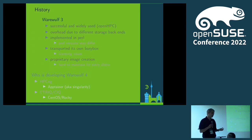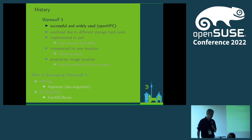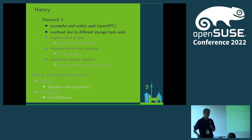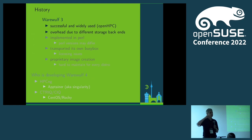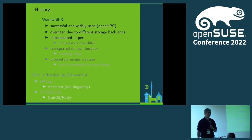Now, Warewulf 4 has a predecessor which is Warewulf 3. This is also a very successful deployment system, actually used in OpenHPC, but OpenHPC will switch in the near future to Warewulf 4. The reason why Warewulf 3 was kind of replaced is because it had different storage backends, which led to lots of code just to handle databases, file backends, and whatever. Also, it was implemented in Perl, and Perl is not something you really want to develop standard code in.